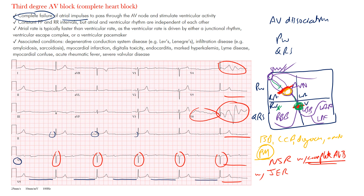To summarize: you have two separate rhythms — a normal sinus rhythm and a junctional escape rhythm — because of complete heart block. There will be a constant P-to-P interval and constant R-to-R interval, as each is an independent rhythm. The atrial rate tends to be faster than the ventricular rate, which is driven by either a junctional rhythm, ventricular escape complex, or ventricular pacemaker.